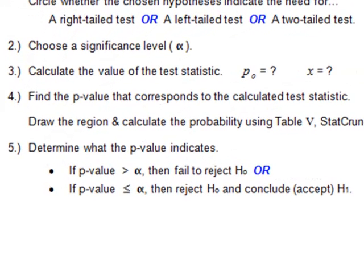Number five, we use the P value to determine the outcome of the hypothesis test. It's one of two. If the P value is greater than alpha, our level of significance, then we fail to reject the null. Or the other outcome, if the P value is less than or equal to alpha, then we reject the null and we conclude the alternative.